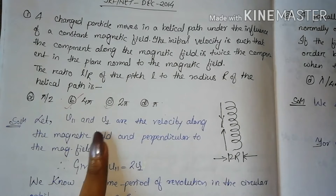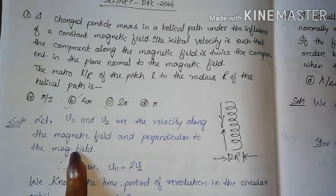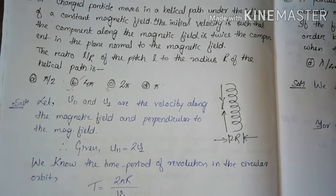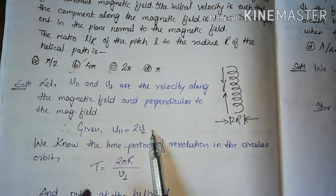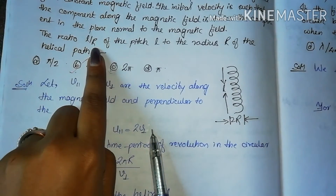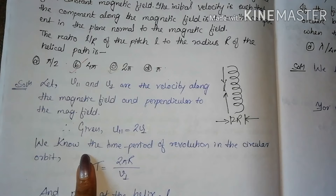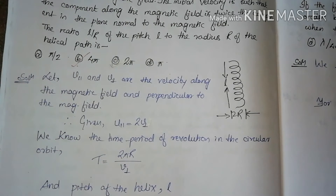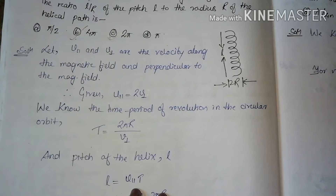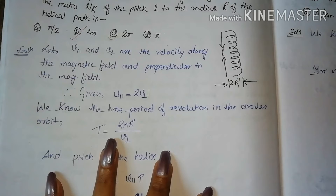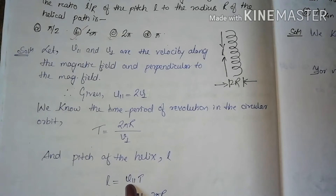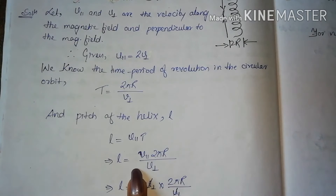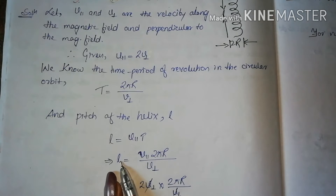V parallel is the component along the magnetic field and V perpendicular is the component in the plane normal to the magnetic field. According to the question, V parallel equals 2 V perpendicular. To find the ratio L by R, we use the formula for pitch: L equals V parallel times T, where T is the time period of revolution, which is 2πR divided by V perpendicular. Substituting and rearranging gives our required ratio.